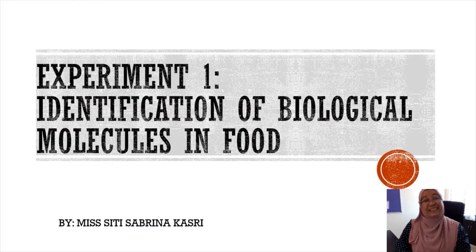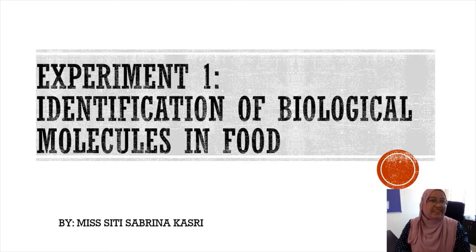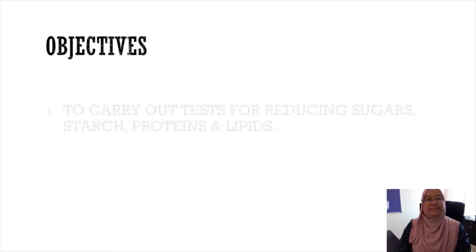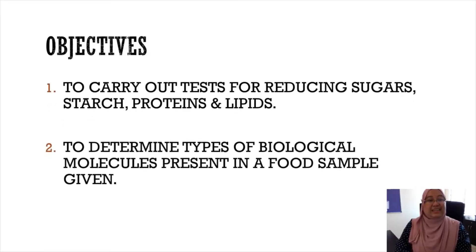Hi and good day, this is Miss Sabrina. I am going to give a brief about Experiment One: Identification of Biological Molecules in Food. The objectives of the experiment are: number one, to carry out tests for reducing sugars, starch, proteins, and lipids; and number two, to determine types of biological molecules present in a given food sample.